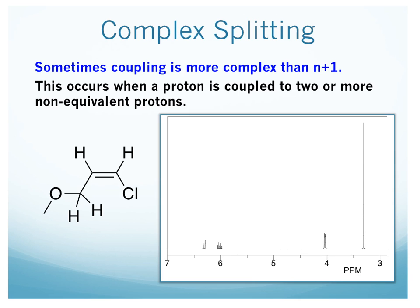Here's another example involving an alkene, so we're going to deal with complex splitting again. There are a couple of simple protons on the spectrum. We have the CH3 group, which is this signal right here. Then we have this CH2 group, and on the adjacent carbon to it there's just one proton. So that CH2 group will just split into a doublet, which is what we have right here.